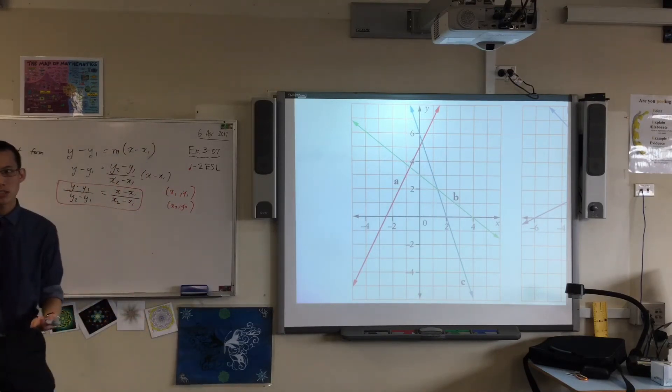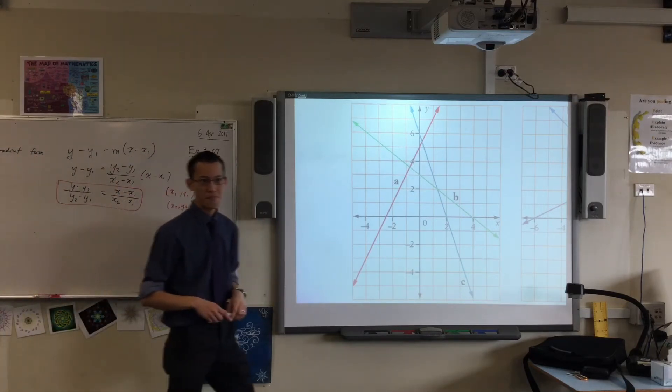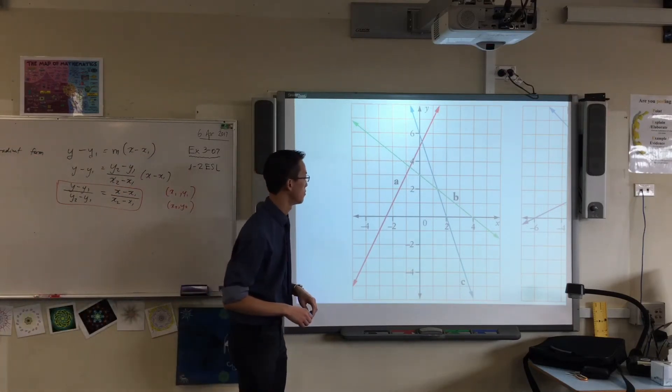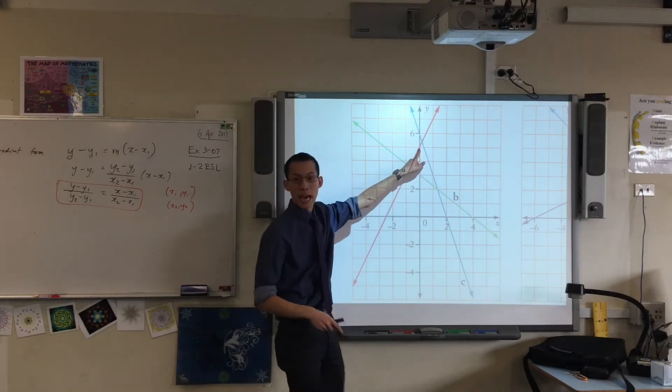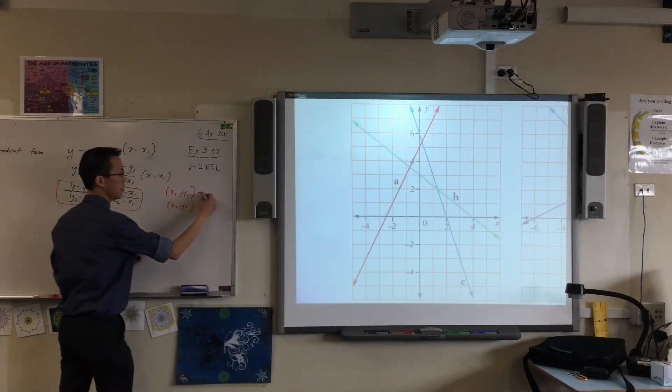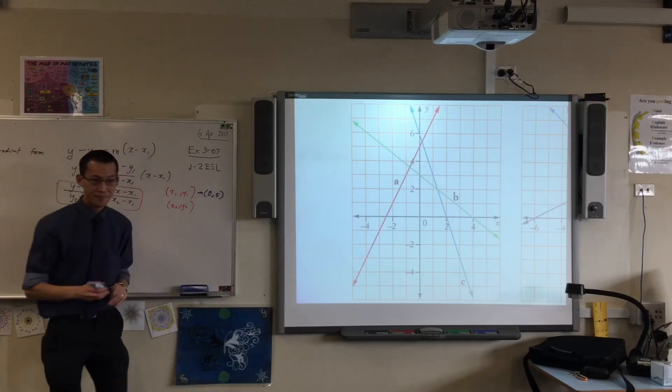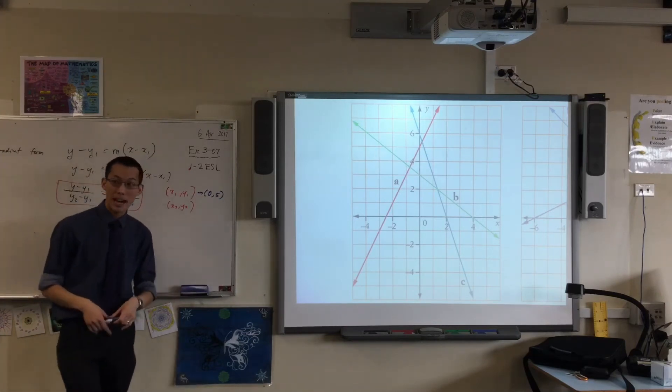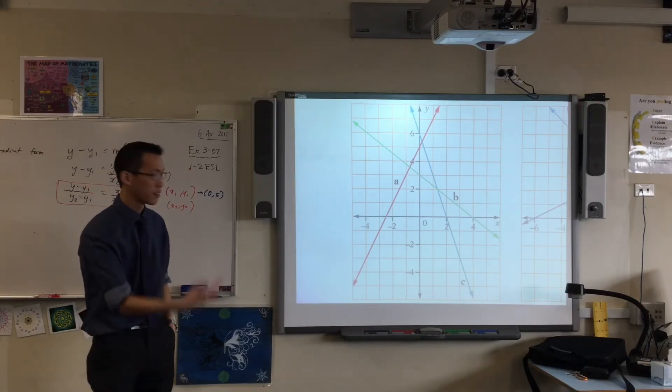All I need is two points that are on this line. So, I want someone to call out what's a point that they can see, which is on the red line. Can you give me coordinates? 0, 5. Okay, 0, 5. So, that is the y-intercept. That's nice and easy. So, let's call this one 0, 5, okay? So, this is going to be our x1, y1. For our x2, y2, again, you can pick any point you like on the line.